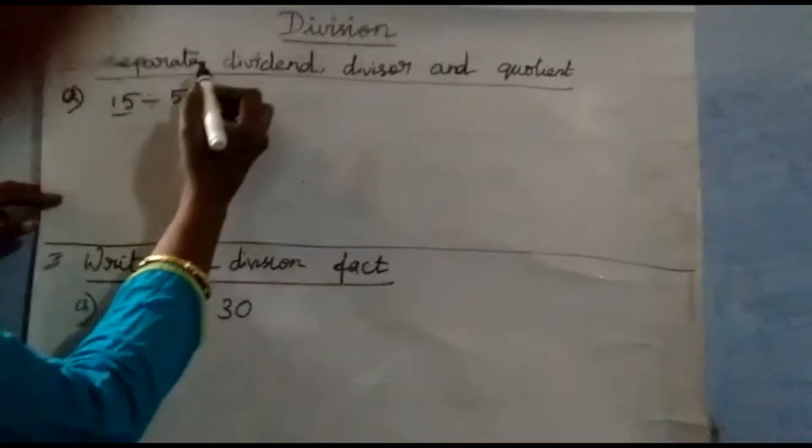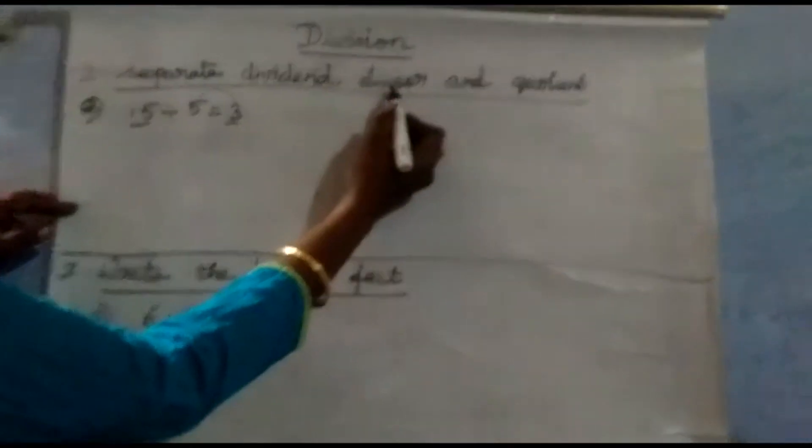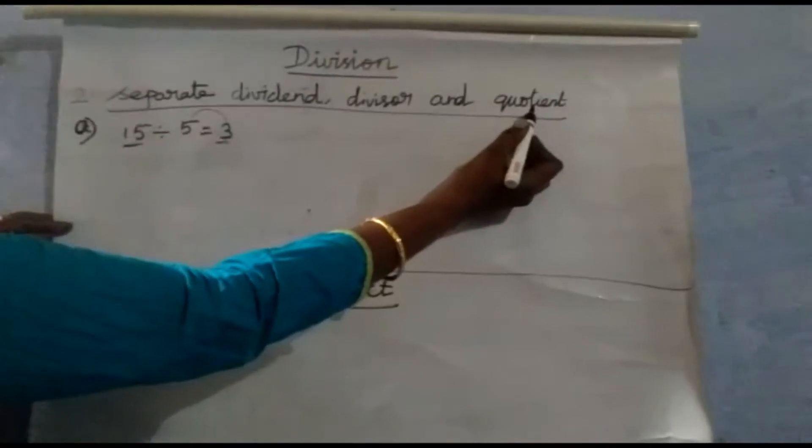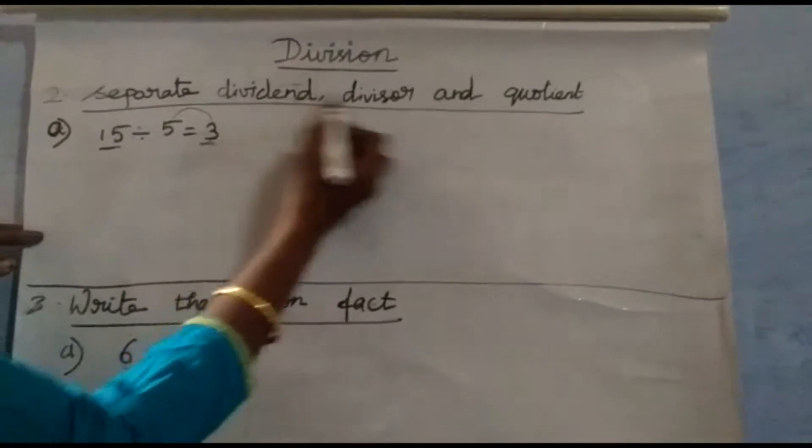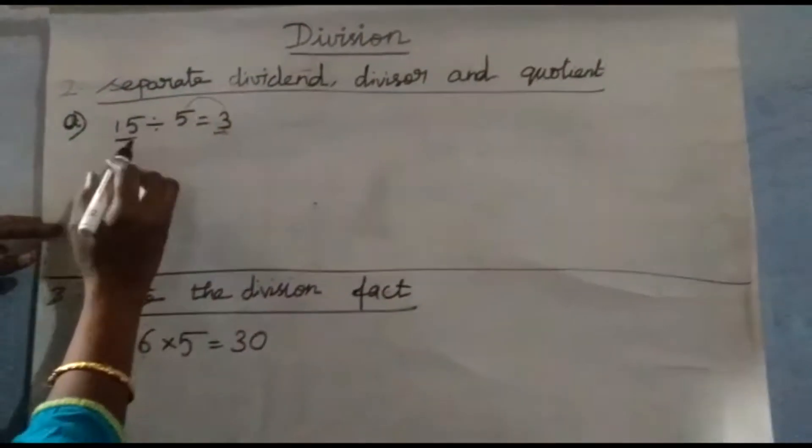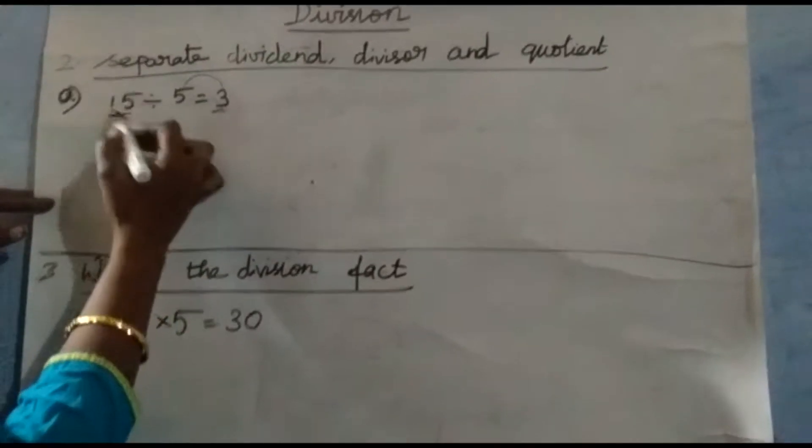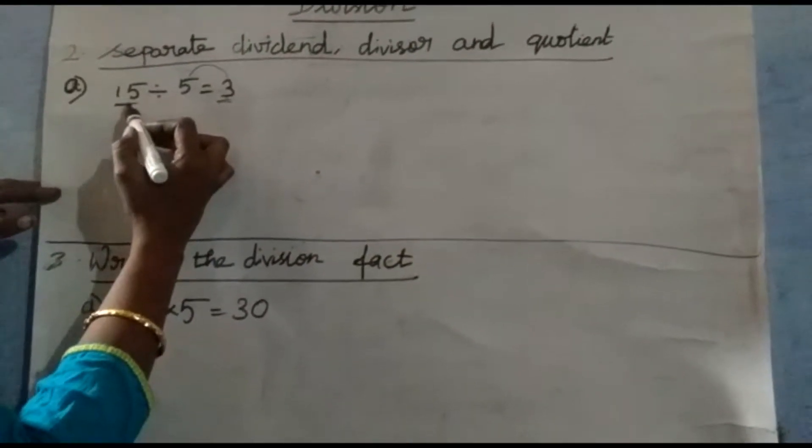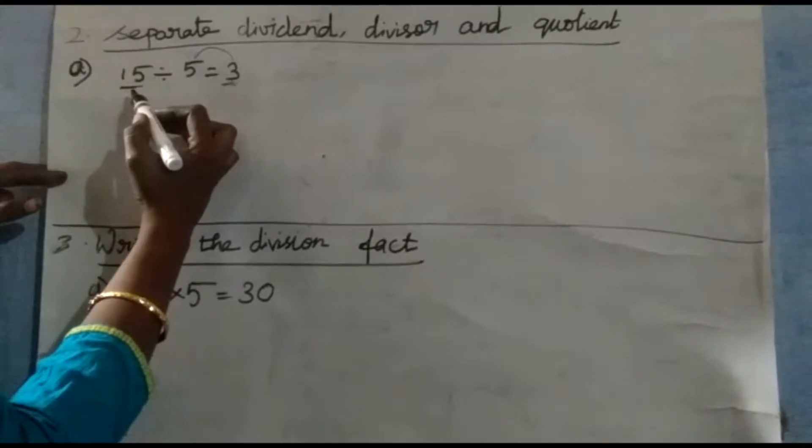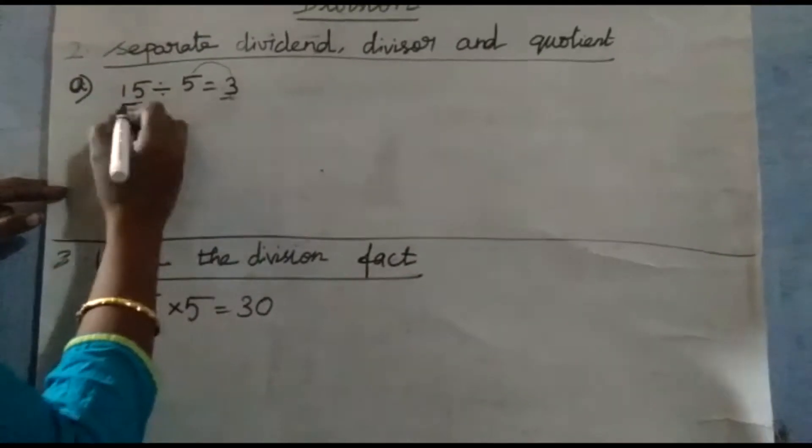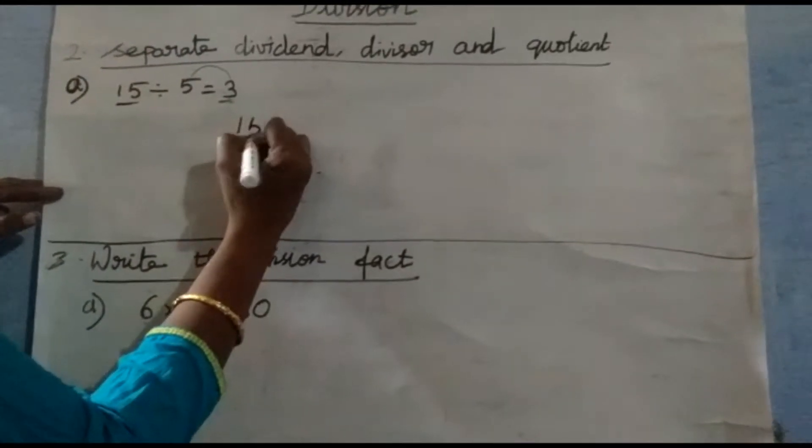Today we are going to see separate dividend, divisor, and quotient. I already taught you which is dividend, divisor, and quotient. See here, 15 divided by 5 equals 3. The first number, the 15 which we are going to divide, is called the dividend. This is the biggest number, so that is called dividend.